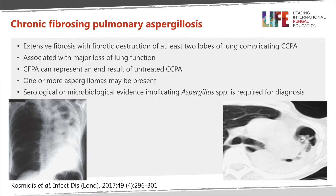Chronic fibrosing pulmonary aspergillosis is an end-stage complication of chronic pulmonary aspergillosis where the whole lung has been destroyed. Patients can have a profound defect in their respiratory function with severe breathlessness and coughing, as well as haemoptysis secondary to this.